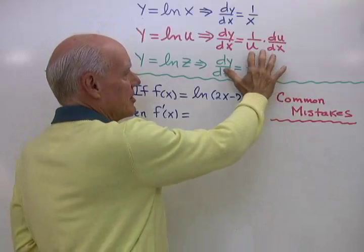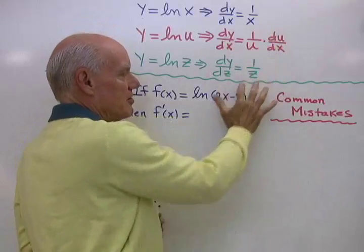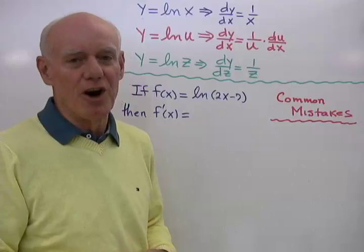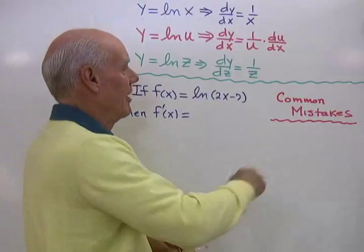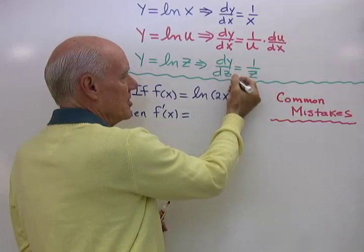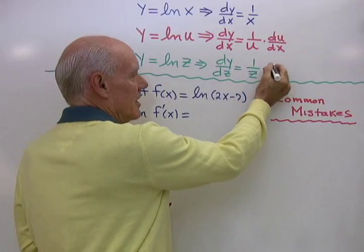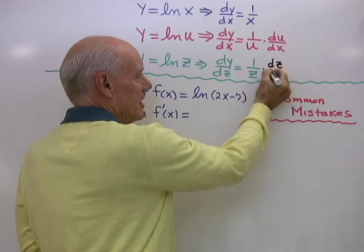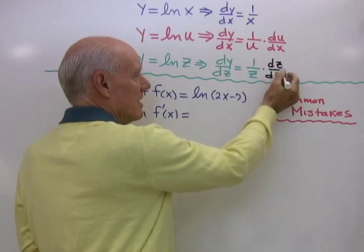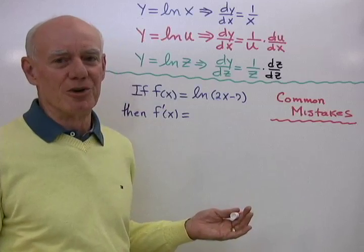Now when I look at this right here, it might look different than these two right here, but it really doesn't. It's really all the chain rule. So if I wanted to write here, dy dz is 1 over z times the derivative of z with respect to z. And that's just 1, so we don't see it.